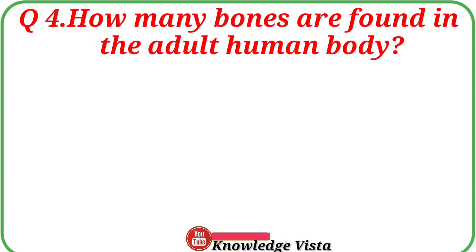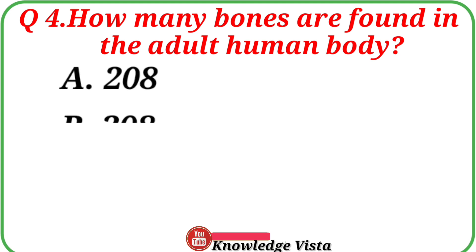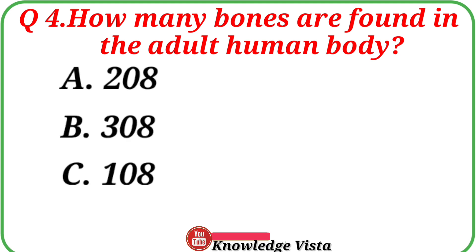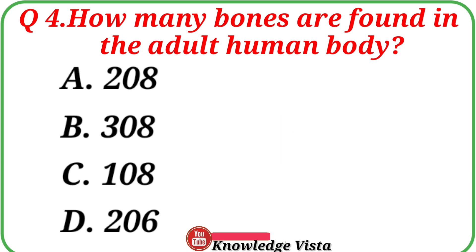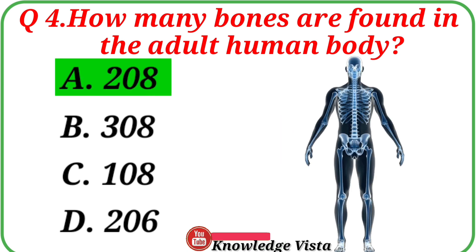Question number 4: How many bones are found in the adult human body? Your options are: A. 208, B. 308, C. 108, D. 206. Correct answer is option A, 208. The number of bones found in adult humans is 208.